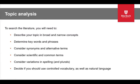Once you have defined and formulated your topic, the next step is to analyse your topic in more detail. To search the literature, you will need to describe your topic in broad and narrow concepts, determine keywords and phrases, consider synonyms and alternative terms, consider scientific and common terms, consider variations in spelling and plurals, and decide if you should use controlled vocabulary — which are subject headings — as well as natural language.